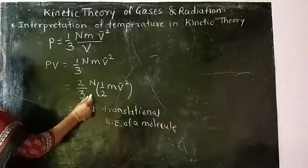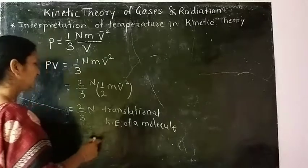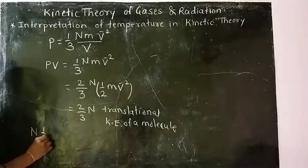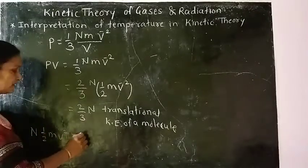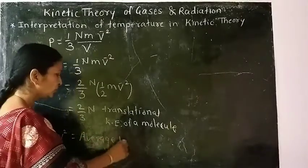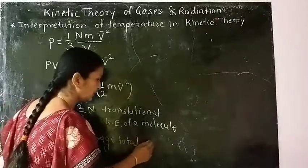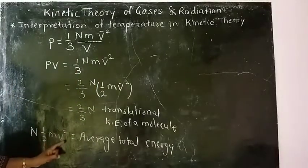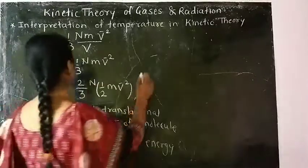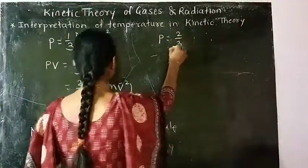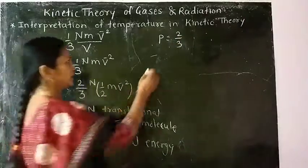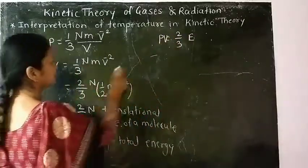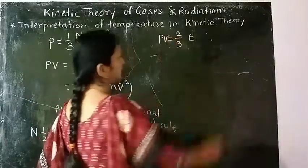So PV = (2/3) × N × translational KE per molecule. When we multiply by capital N, N × (1/2 × M × v-bar²) becomes the average total energy of all gas molecules, capital E. Therefore PV = (2/3) × E.